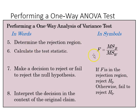Next, we calculate our test statistic using the formula we've discussed, and then based on where that falls relative to the rejection region, we make our decision whether or not we're going to reject or fail to reject the null. Based on that, we interpret the decision in the context of the original claim.